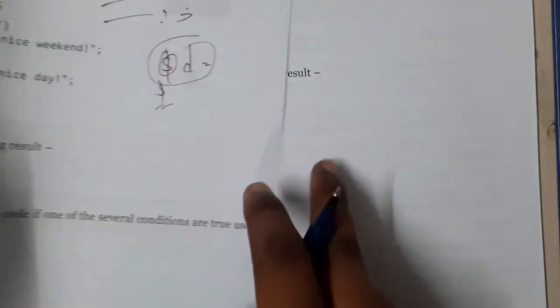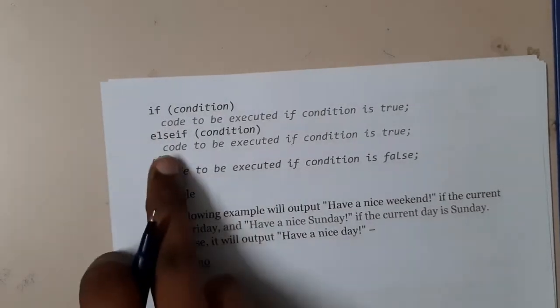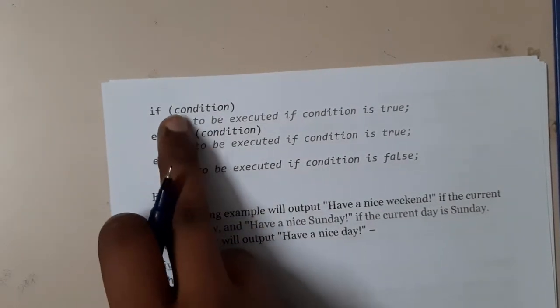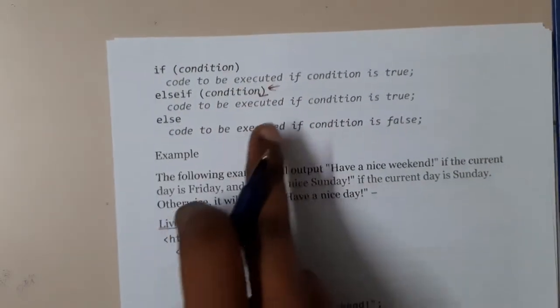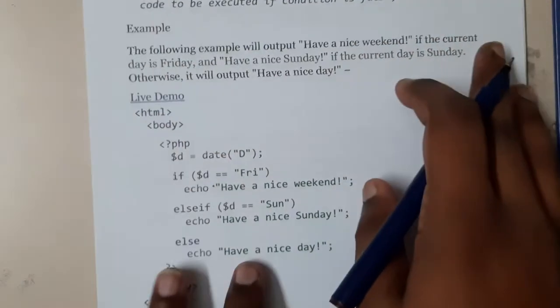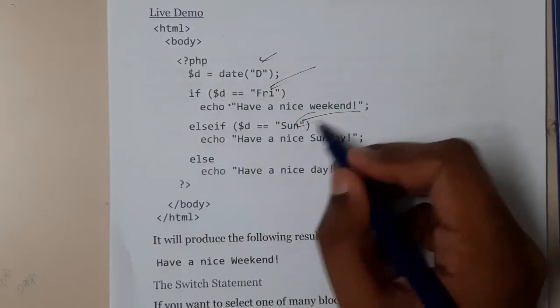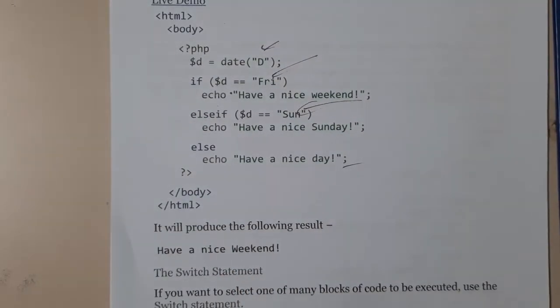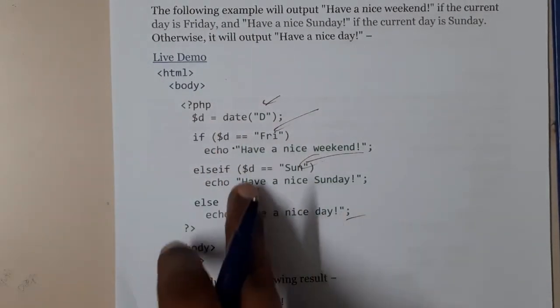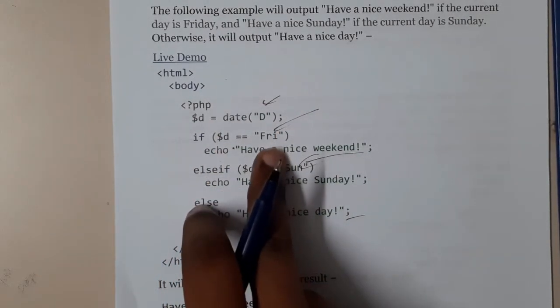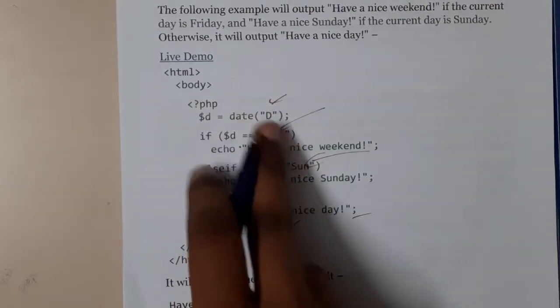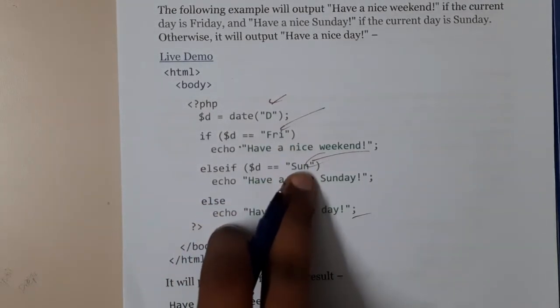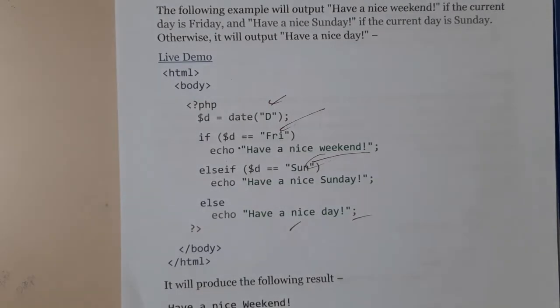Now let us go through the if-else-if-else code. If this condition is true it executes; if false, it checks the next condition; if that is also false, it executes the else block. In this example, we use $d and check for Friday and Sunday. Assume today is not Friday and not Sunday — it will print 'Have a nice day'. If it is Sunday, it prints the Sunday message.